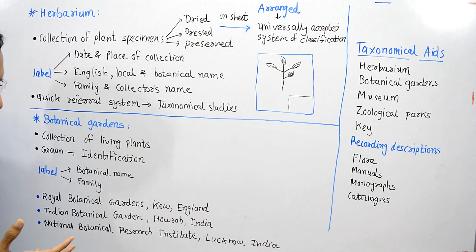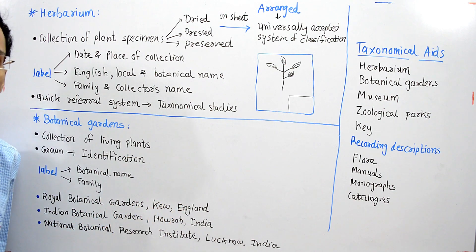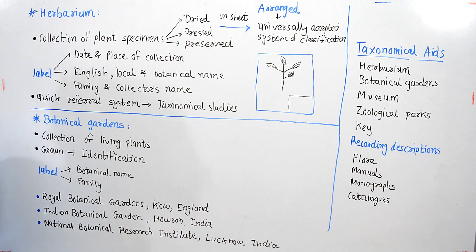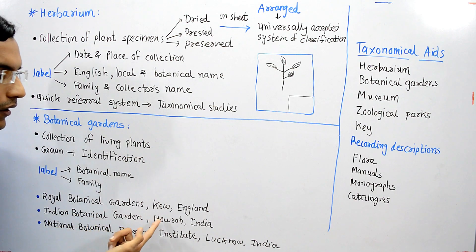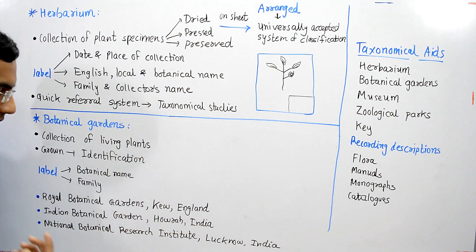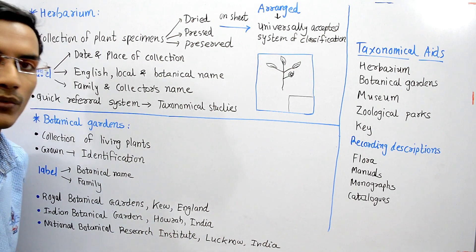There are names of a few botanical gardens mentioned in the NCERT textbook. First is the Royal Botanical Garden, Kew, England — this botanical garden has the world's largest collection of living plants. The second and third botanical gardens are located in India: the Indian Botanical Garden, Howrah, India, and the National Botanical Research Institute, Lucknow, India.